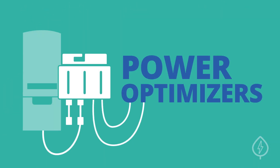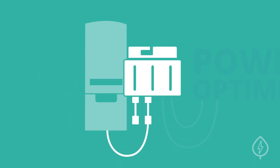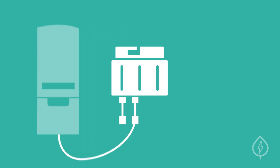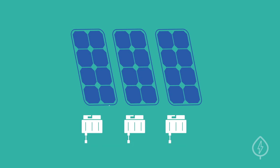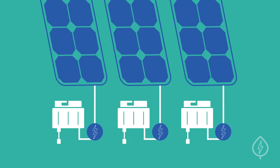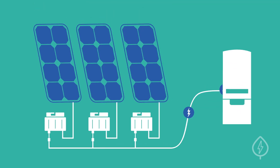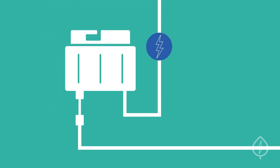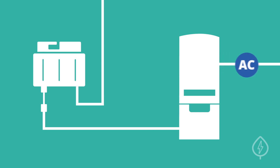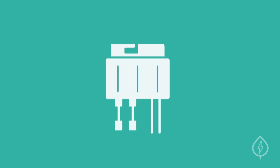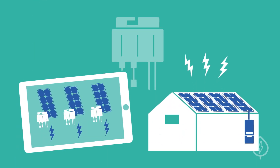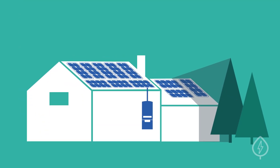Power optimizer systems are a hybrid between string inverters and microinverters. With this technology, optimizers located at each solar panel condition the electricity before sending it down a string to a central inverter. This conditioning process improves the overall efficiency of the system by optimizing the voltage of the electricity, making it easier to convert from DC to AC power. Optimizers offer similar monitoring and production benefits to microinverters and work well for the same types of installations.